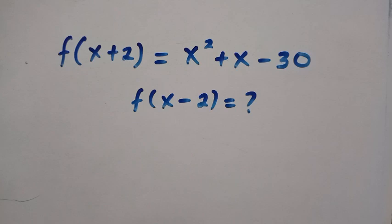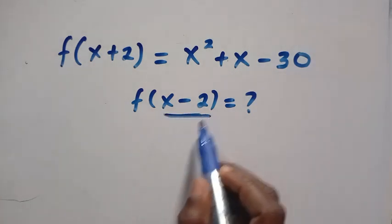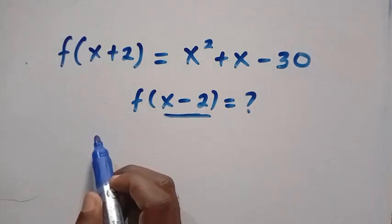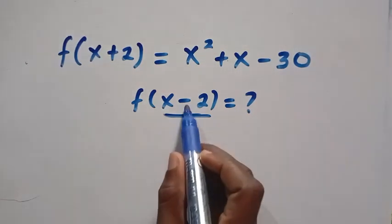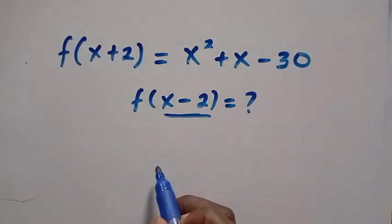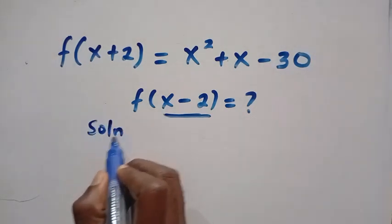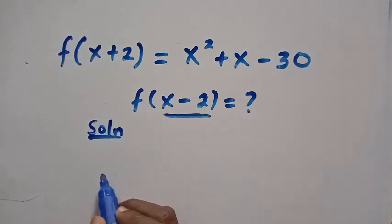We are given f(x+2) equals x squared plus x minus 30, and what is f(x-2)? I am going to be solving this in two different ways, step by step.